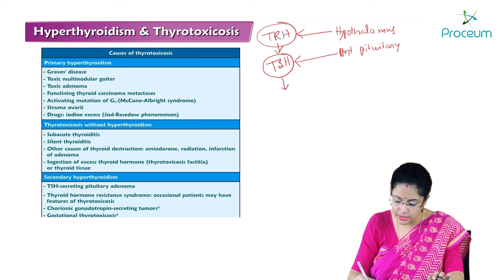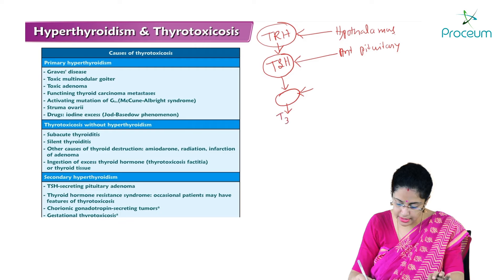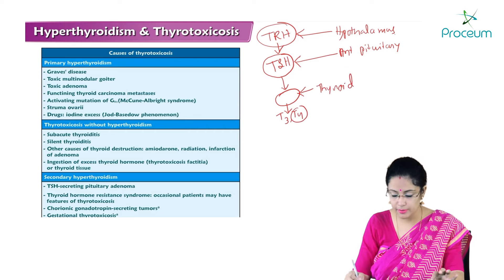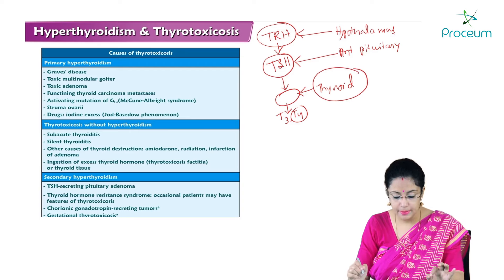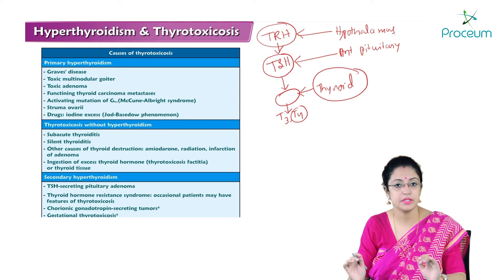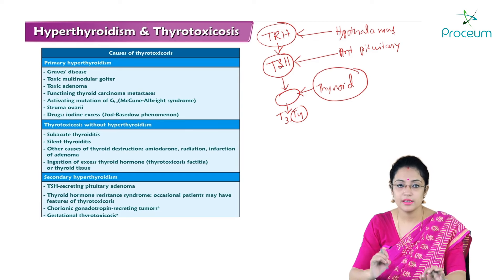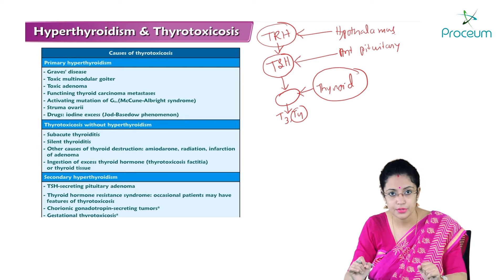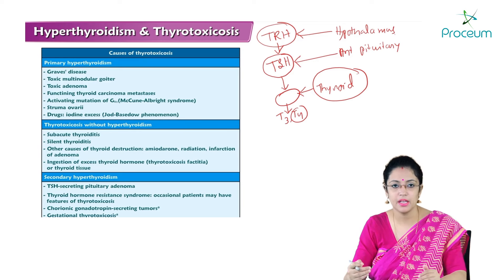TSH will act on the thyroid gland to release T3 and T4, mainly T4. If there is a problem in the thyroid gland, then we call it primary hyperthyroidism — that is, increased level of thyroid hormone due to a problem in the thyroid gland. If the problem is in the pituitary gland or in the hypothalamus, we call it secondary hyperthyroidism.